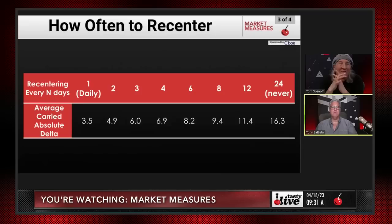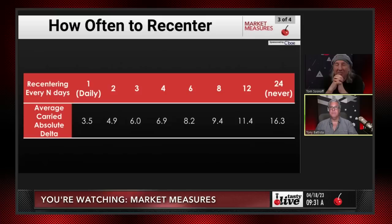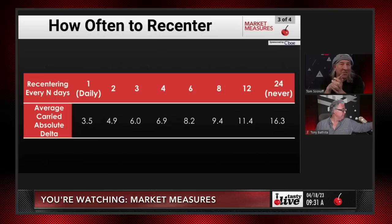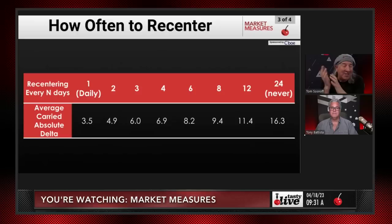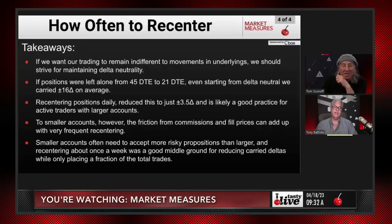This validates the argument to make adjustments, though others might accept 16 deltas over 24 days — that's a valid approach too now that you know the numbers. I've never seen the average carried absolute delta from adjusting strangles displayed like this in all my years of trading. Adjusting every one to three days keeps you wrapped around 5 deltas, which is very manageable — though this is SPY; something like Netflix will move more.